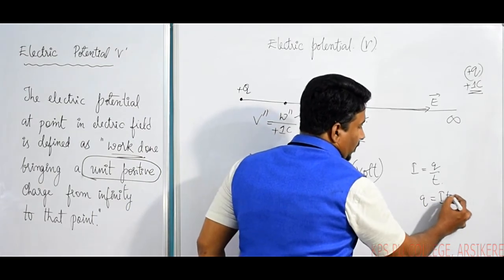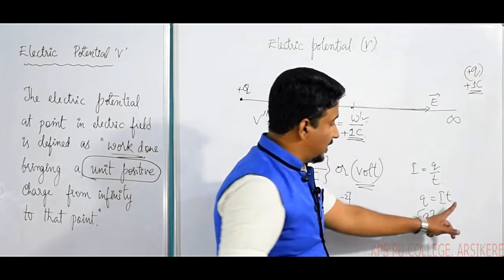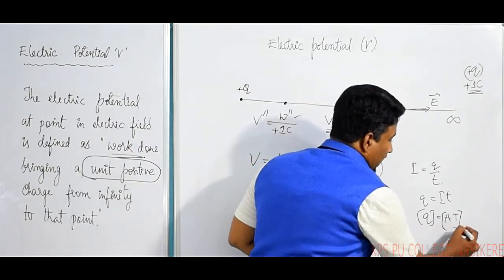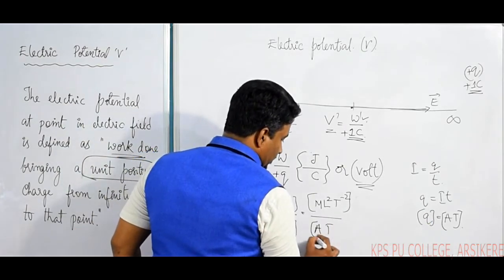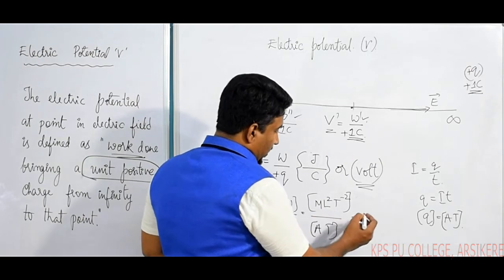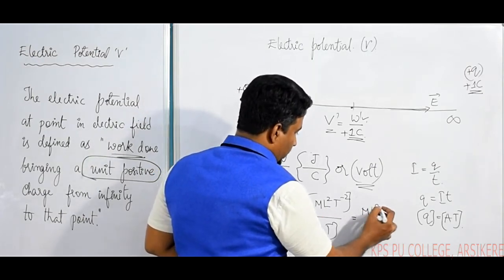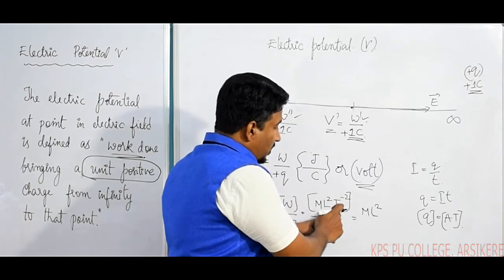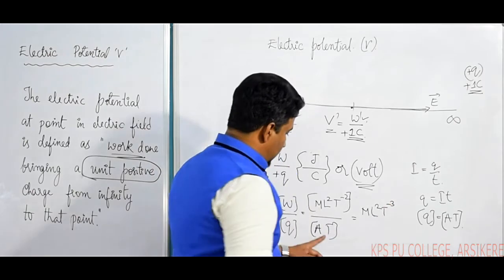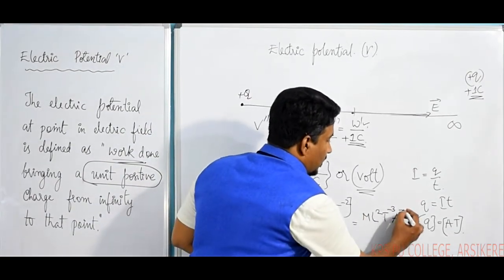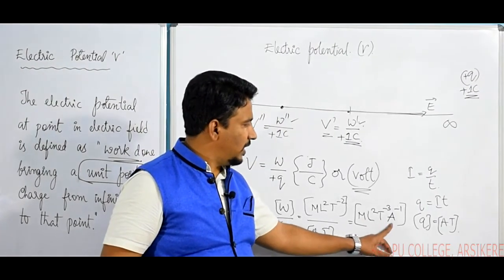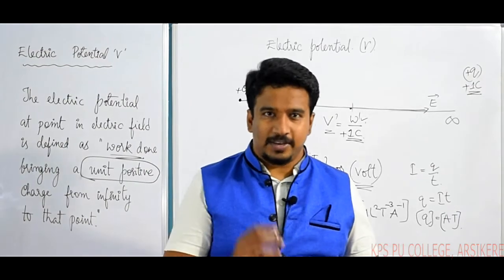Charge is equal to current into time, so the dimension of charge is Ampere into time, written as A T. Simplifying, the dimension of Electric Potential becomes M L squared T to the power minus 2 divided by A T, which gives M L squared T to the power minus 3 A to the power minus 1.